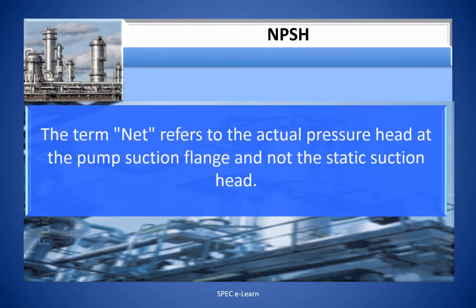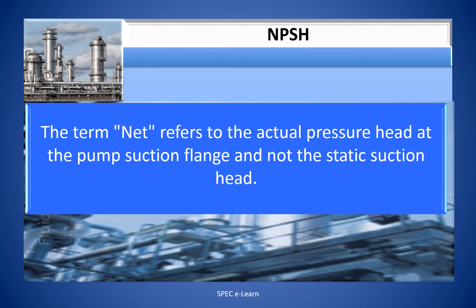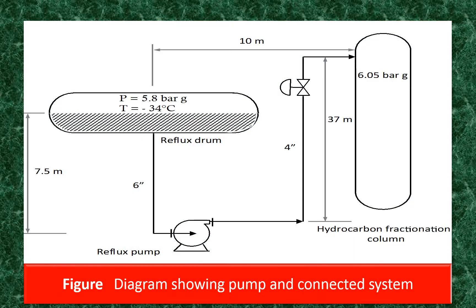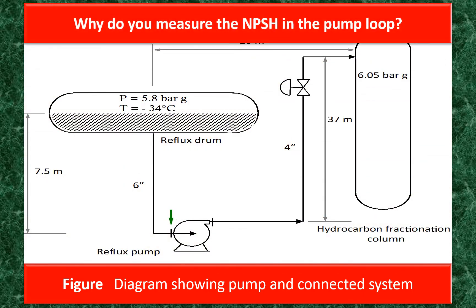The term 'net' refers to the actual pressure head at the pump suction flange and not the static suction head. NPSH required is denoted as NPSH required, and is a function of the pump design. NPSH is measured at the pump suction flange — the point at which the velocity of the liquid is maximum as it accelerates toward the eye of the impeller.